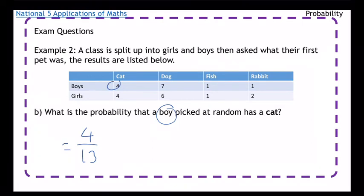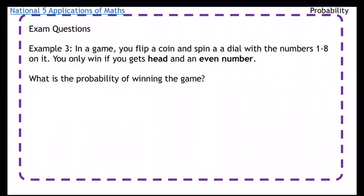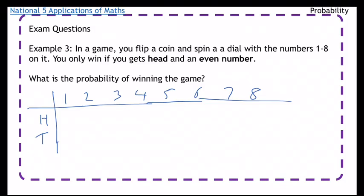Third example: In a game, you flip a coin and spin a dial with numbers one to eight on it. You only win if you get a heads and an even number. We're going to draw another table out this time. So we're going to have heads and we're going to have tails. That is our coin on that side. On the top we're going to have our numbers.